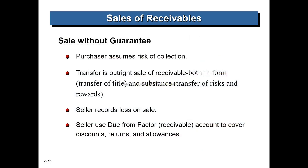The purchaser assumes all risk and reward. So if you have any risk and reward, you will have a responsibility. In a transfer outright — a sale of risk — both in the form of transferring title and in substance transferring risk and reward, you will have a sale and a loss on sale.